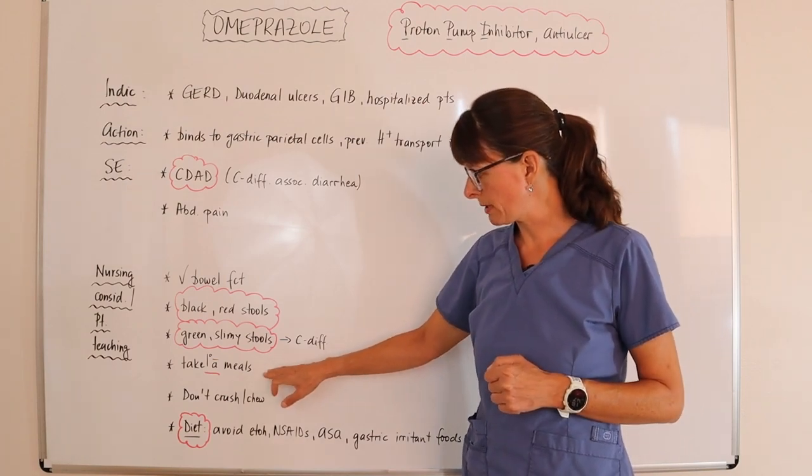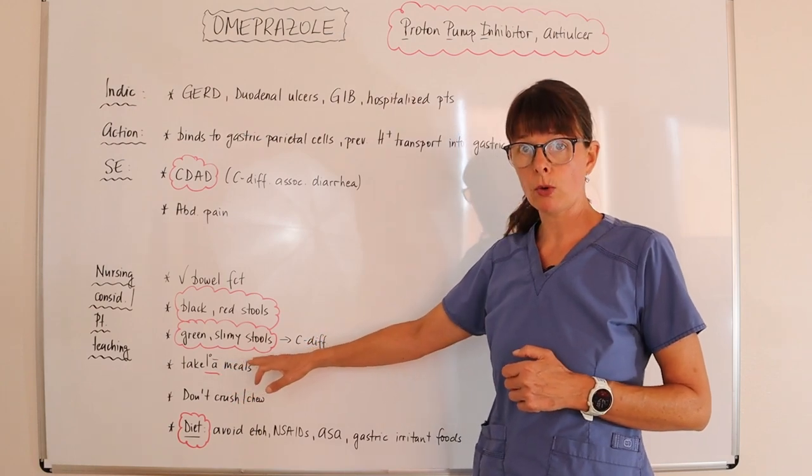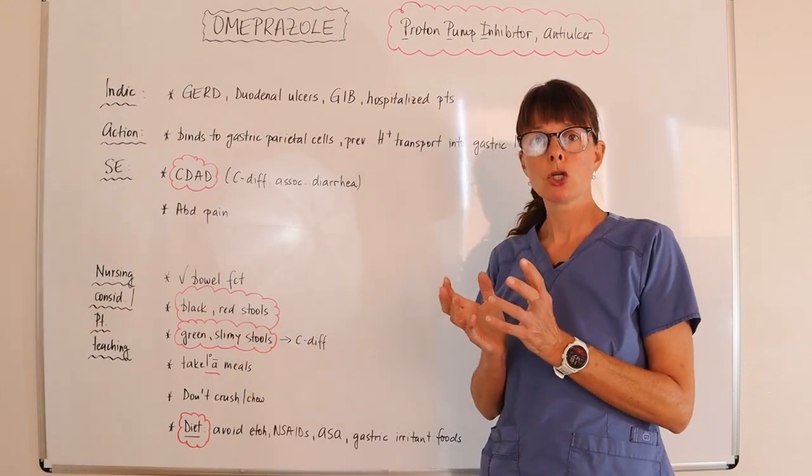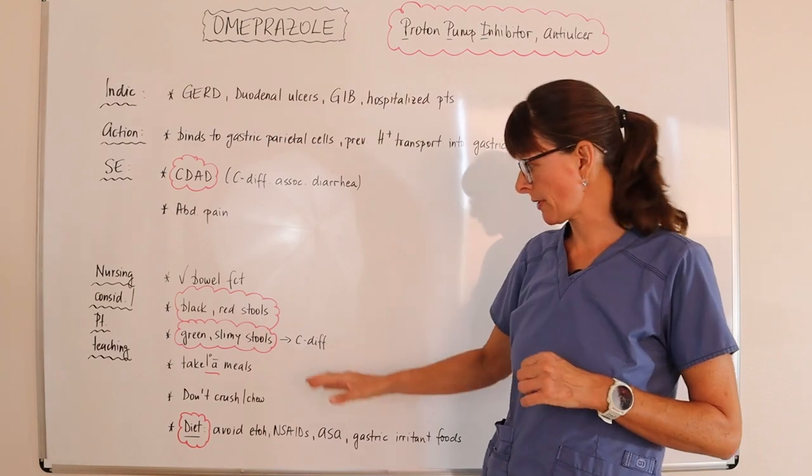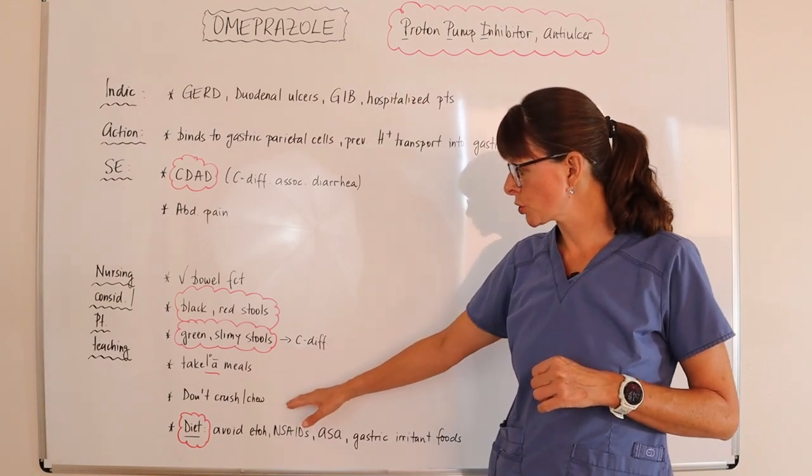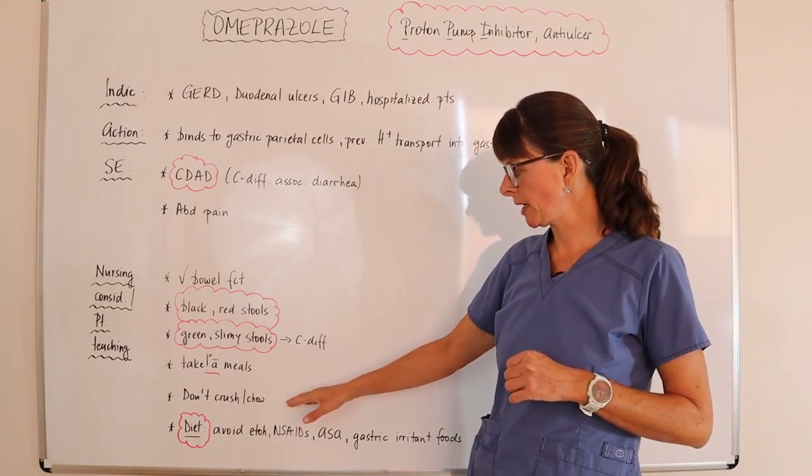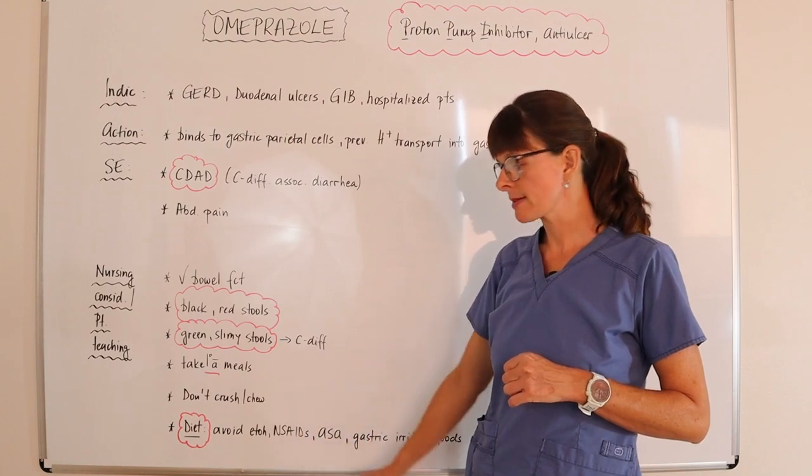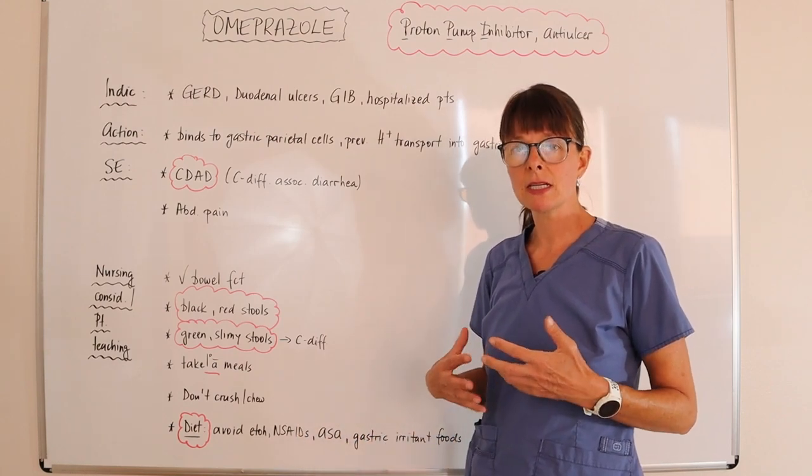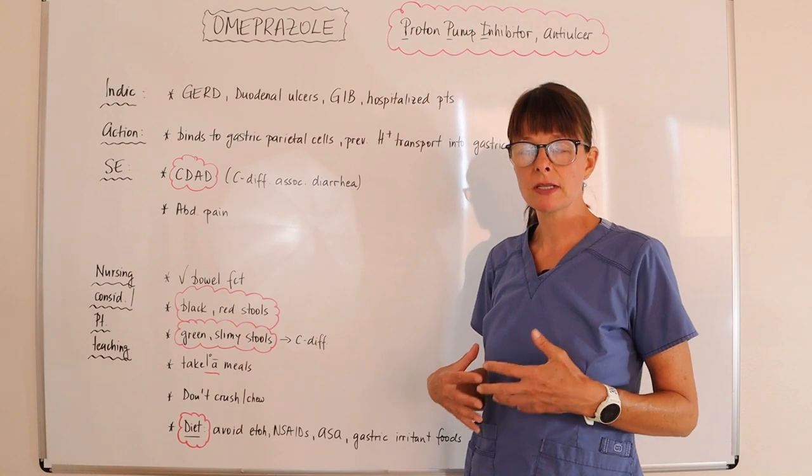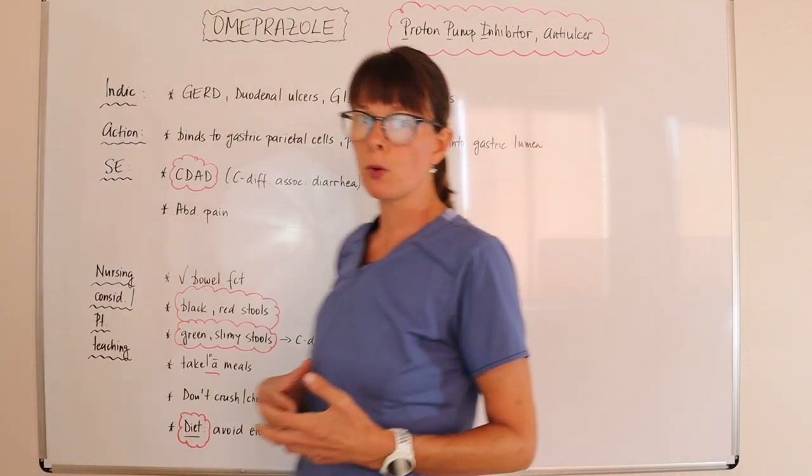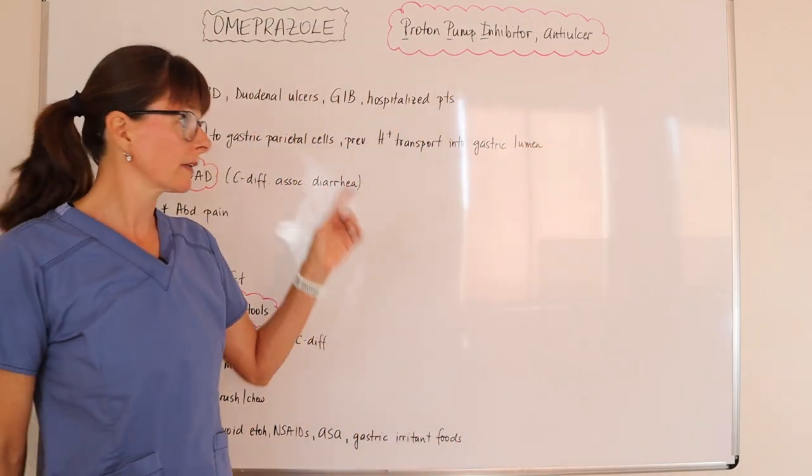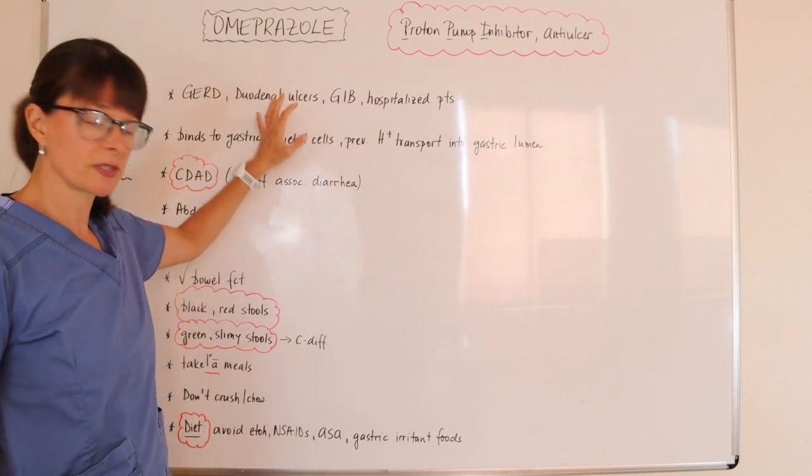Omeprazole needs to be taken before meals, preferably about one hour so that it has time to work on those gastric parietal cells. We don't want to chew or crush the medication. And also we want to advise our patient to avoid any gastric irritant medications and foods that might be making their underlying physiology worse.